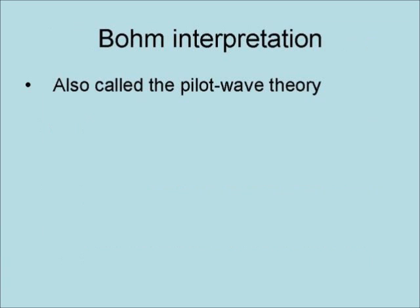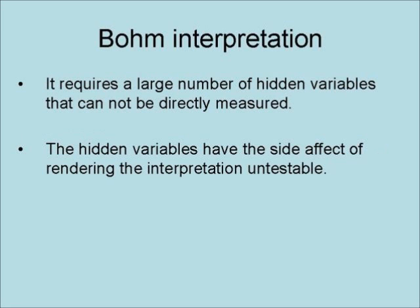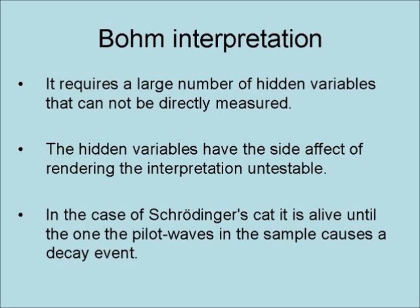The Bohm interpretation of quantum mechanics is also called the pilot wave theory. It requires a large number of hidden variables that cannot be directly measured. The hidden variables have the side effect of rendering the interpretation untestable. In the case of Schrödinger's cat, it is alive until one of the pilot waves in the sample causes a decay event.